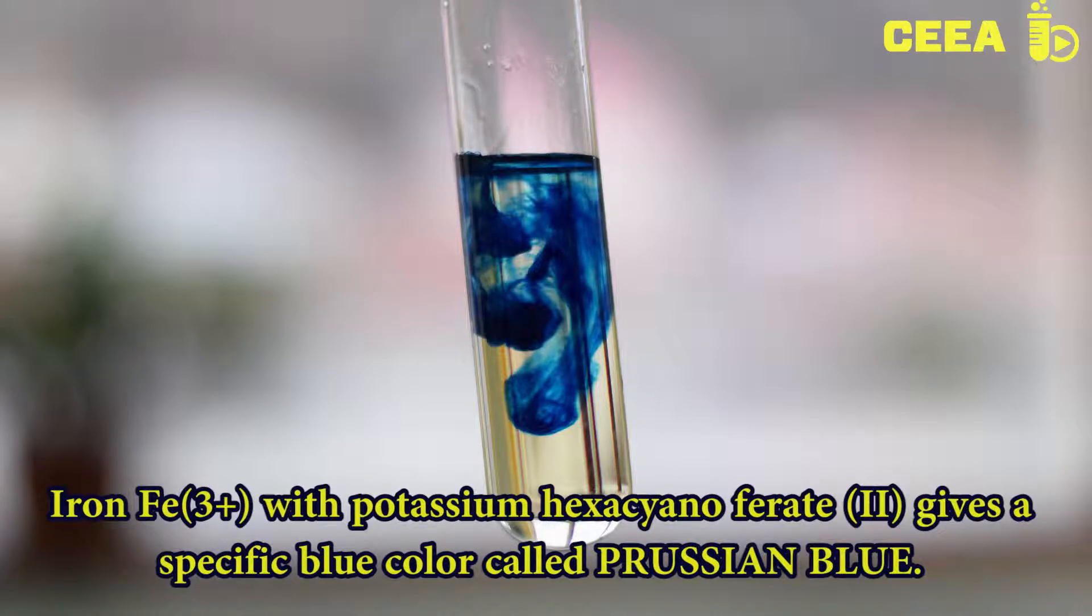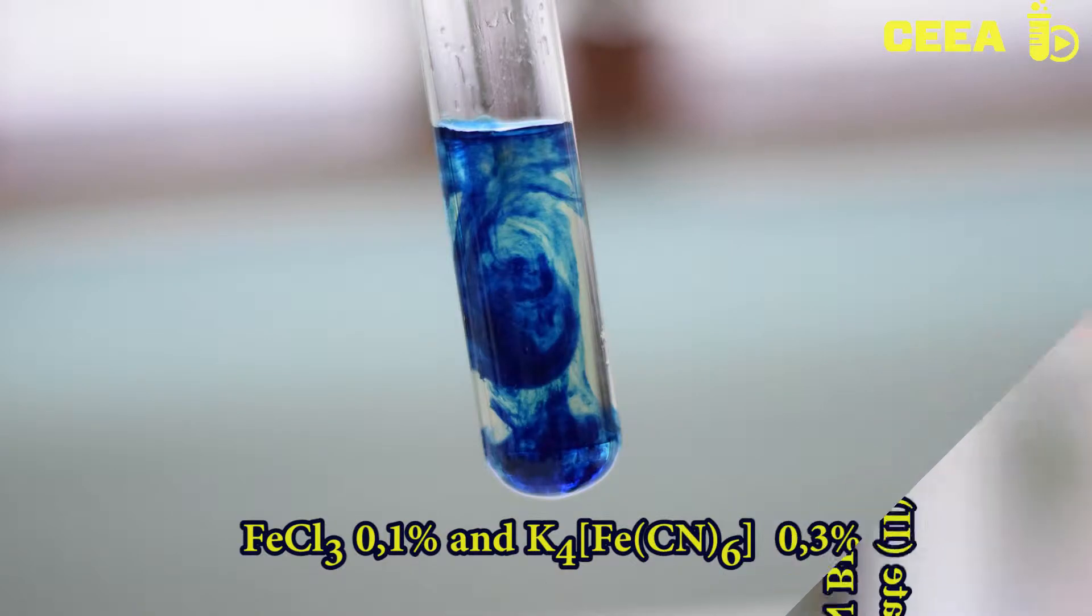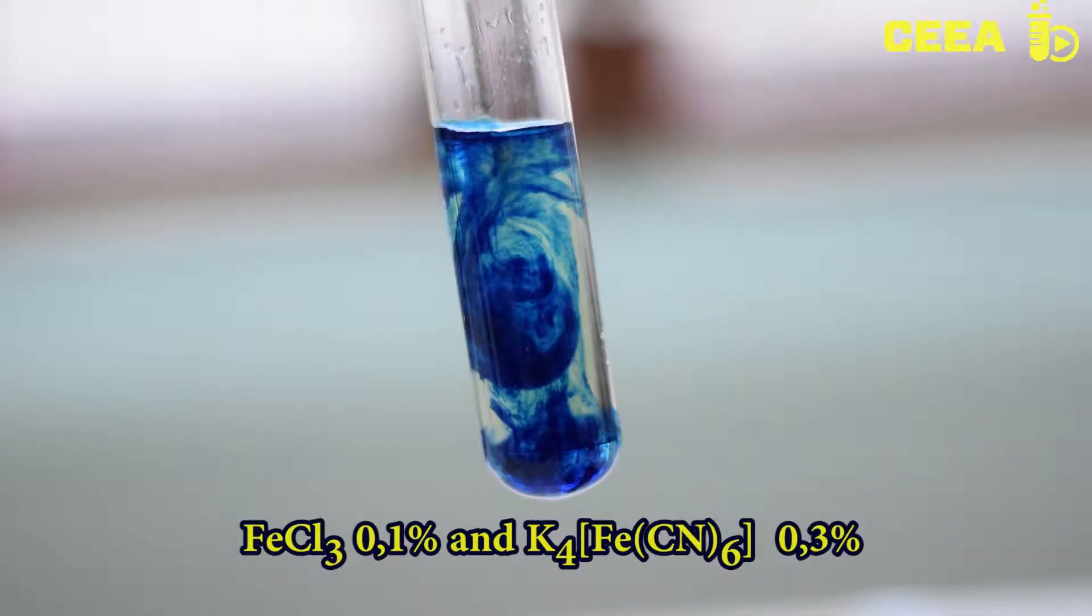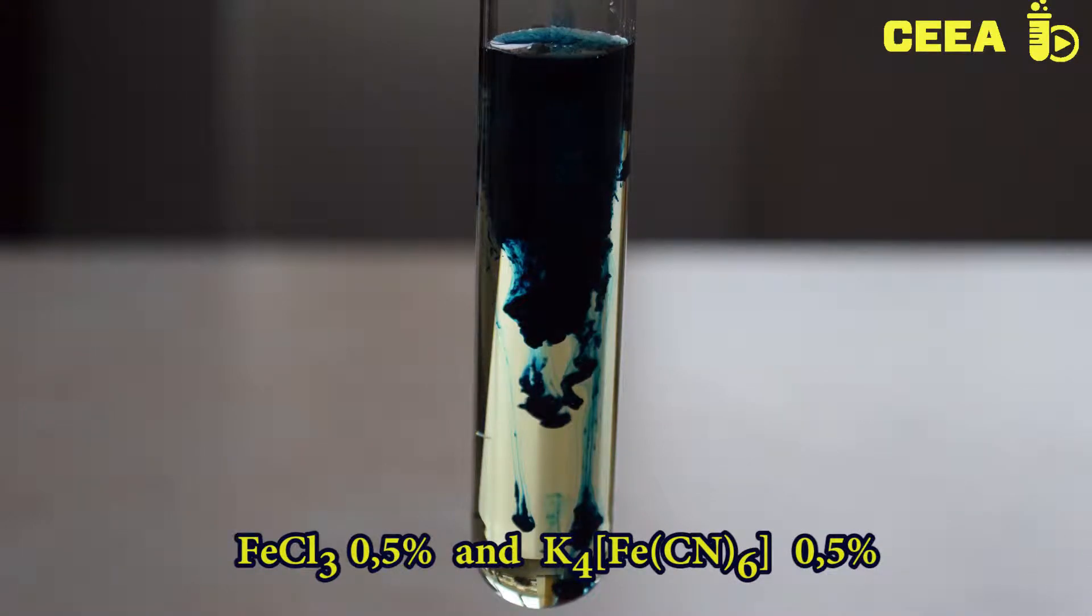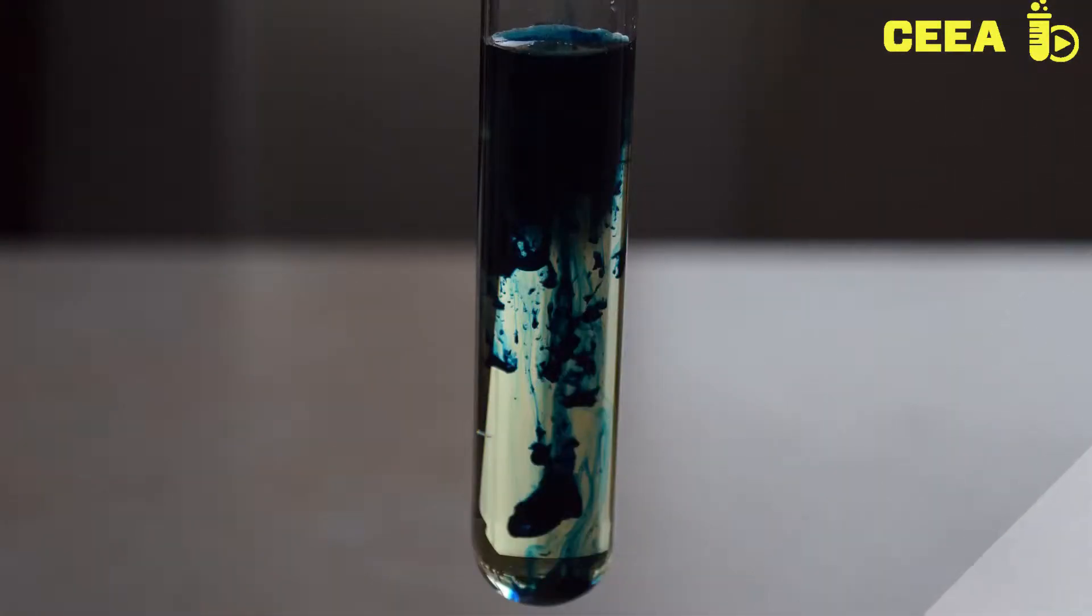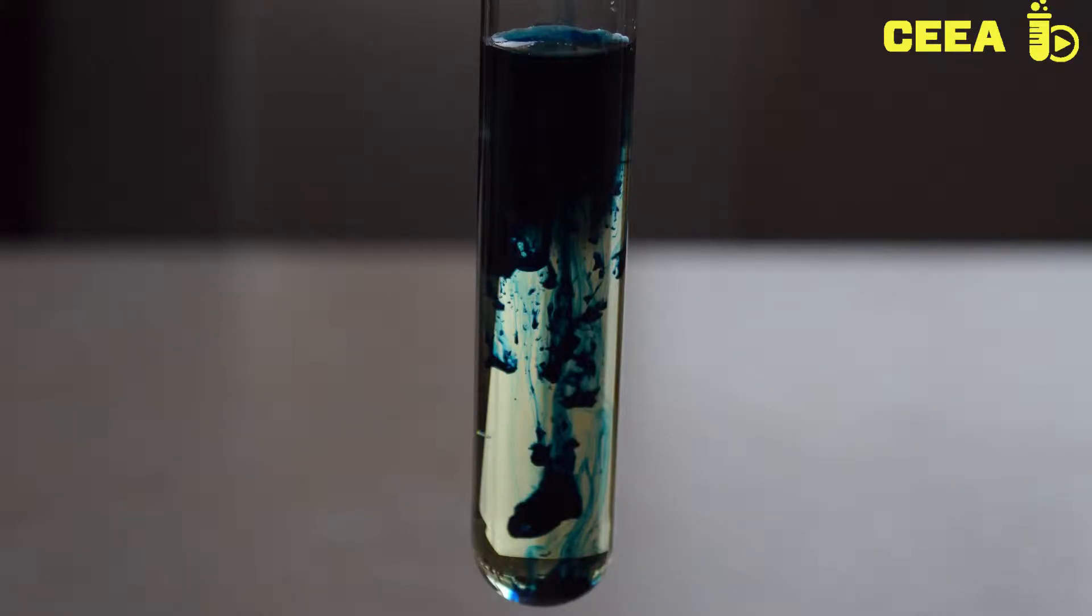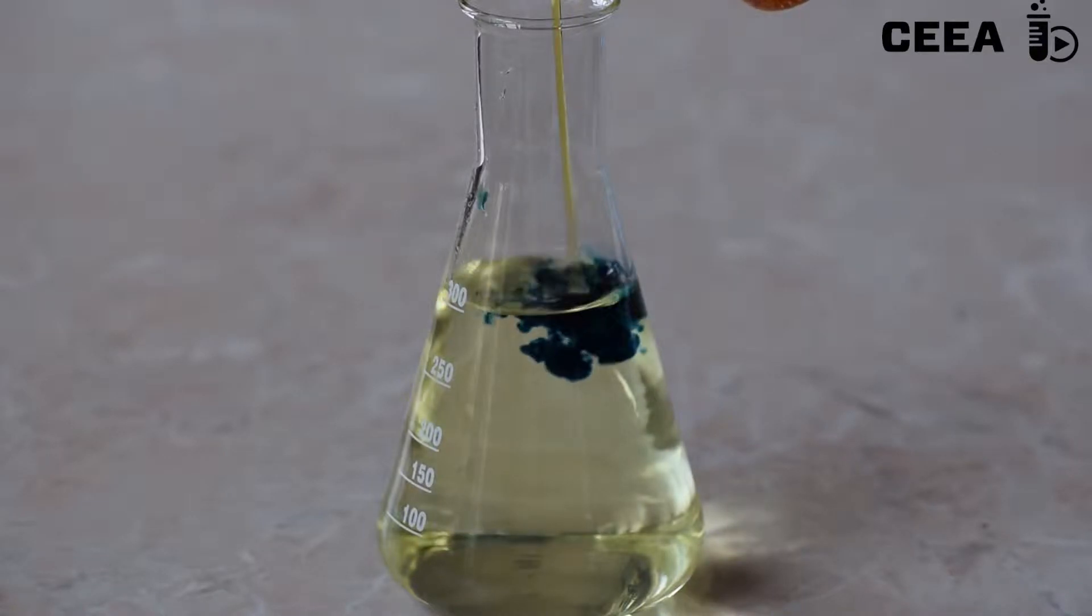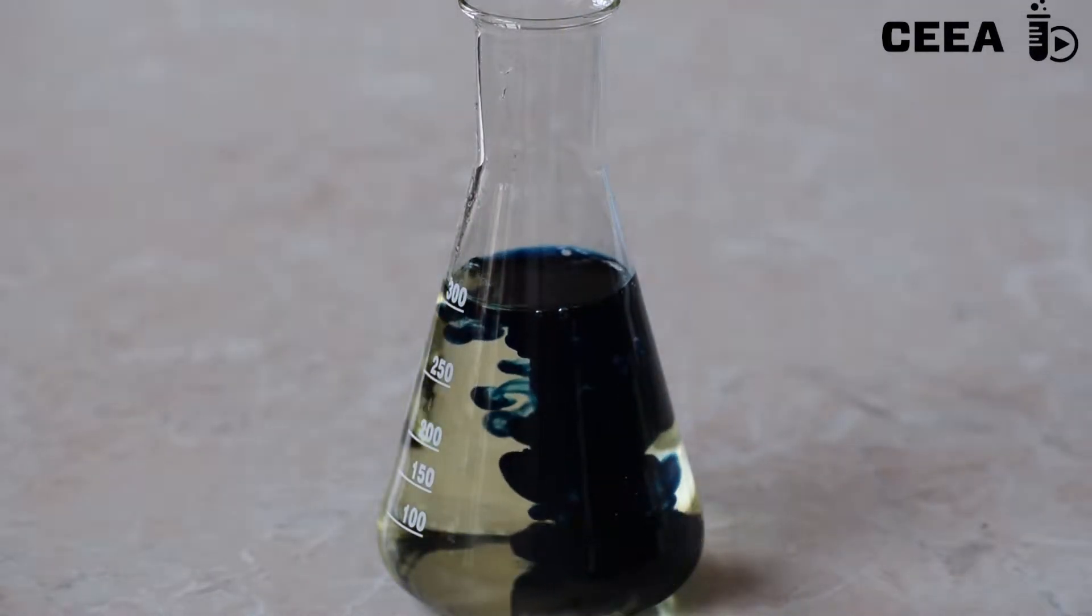When iron chloride reacts with potassium hexacyanoferrate II, a blue compound is obtained, the ferric hexacyanoferrate II called Berlin Blue or Prussian Blue. According to the concentration of the used solutions, we get either a blue color or an abundant blue precipitate.